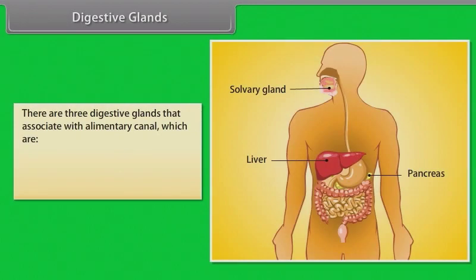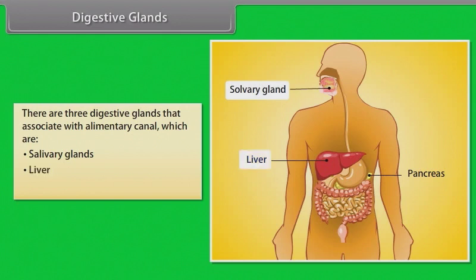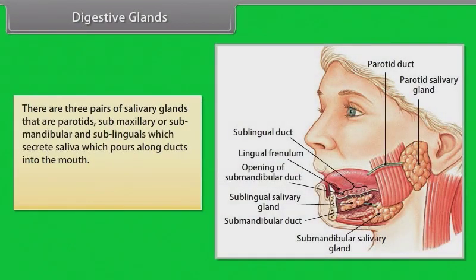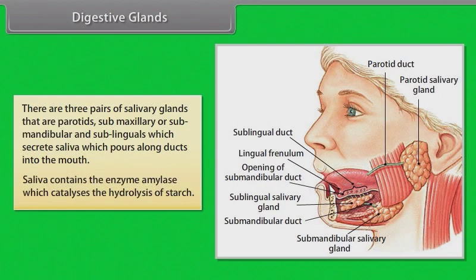There are three digestive glands associated with the alimentary canal: salivary glands, liver, and pancreas. There are three pairs of salivary glands — parotids, submaxillary or submandibular, and sublinguals — which secrete saliva that pours along ducts into the mouth. Saliva contains the enzyme amylase, which catalyzes the hydrolysis of starch.